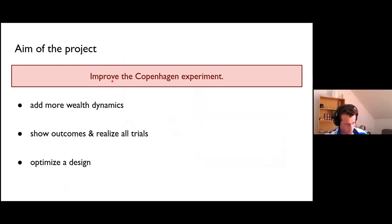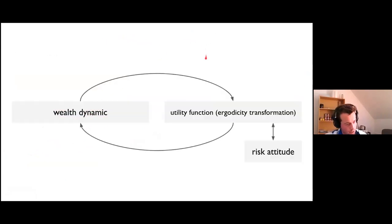Now let's get back to the aim of my project. At the onset of the project we tried to figure out how to improve the experiment and we had these three ideas. First of all, we wanted to add more wealth dynamics and not only have two, but we also wanted to have at least one dynamic which encourages risk-seeking behavior. Then we wanted to change the design slightly to show all the outcomes and realize all trials. Finally, we wanted to optimize the design such that we have greater probability to discriminate between competing models.